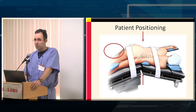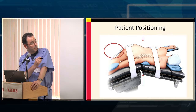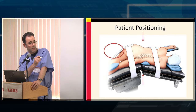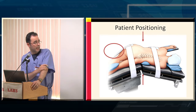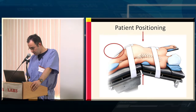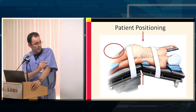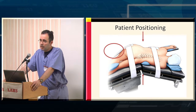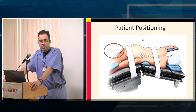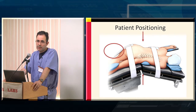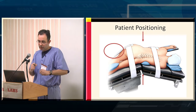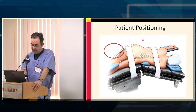Regarding patient positioning: you're going to gain access to the retroperitoneal space by having the patient appropriately positioned such that the iliac crest is separated away from the bottom part of the ribcage. You need to place the patient on a table such that you can break the table and gain that access point. An important feature of the positioning is to make sure that the leg is flexed — that way you have less tension within the psoas muscle itself, which gives you more latitude with the degree to which you can retract once you're trans-psoas.